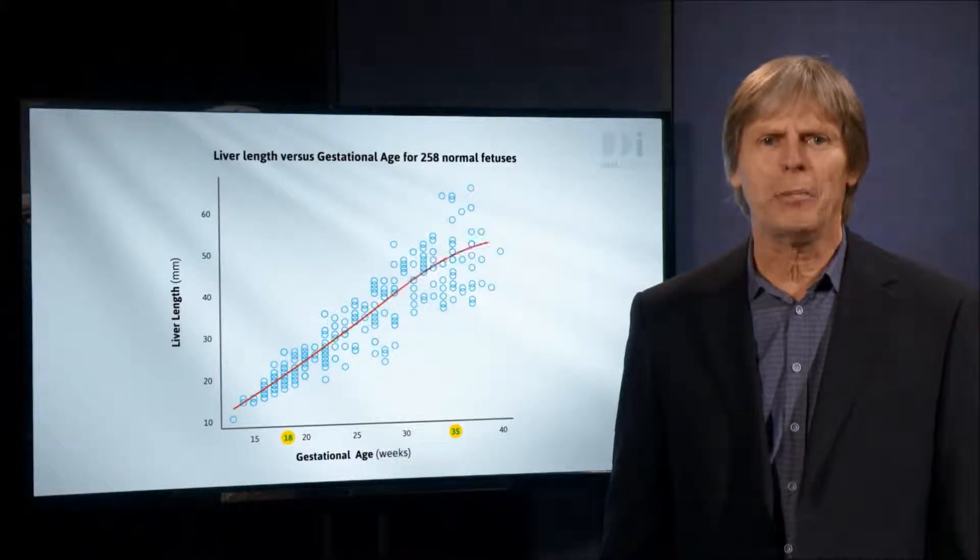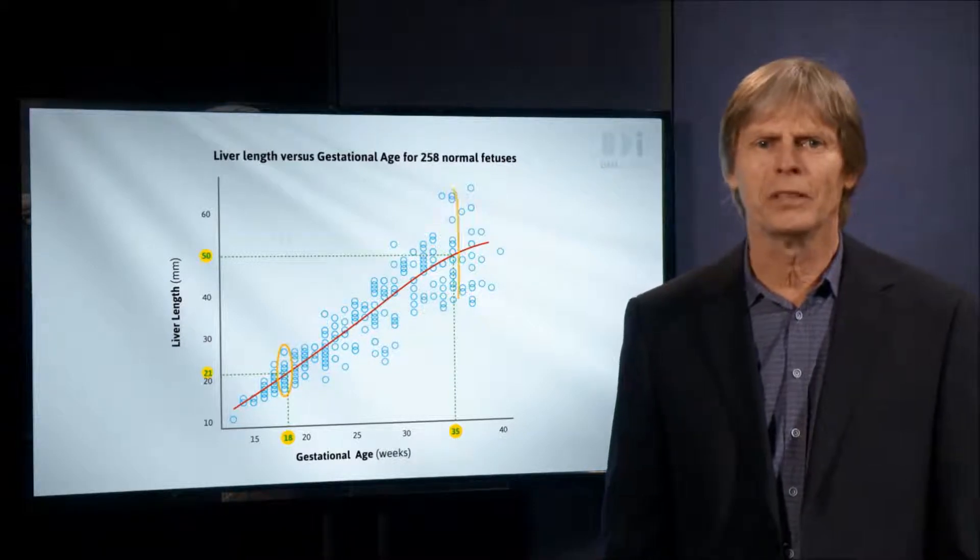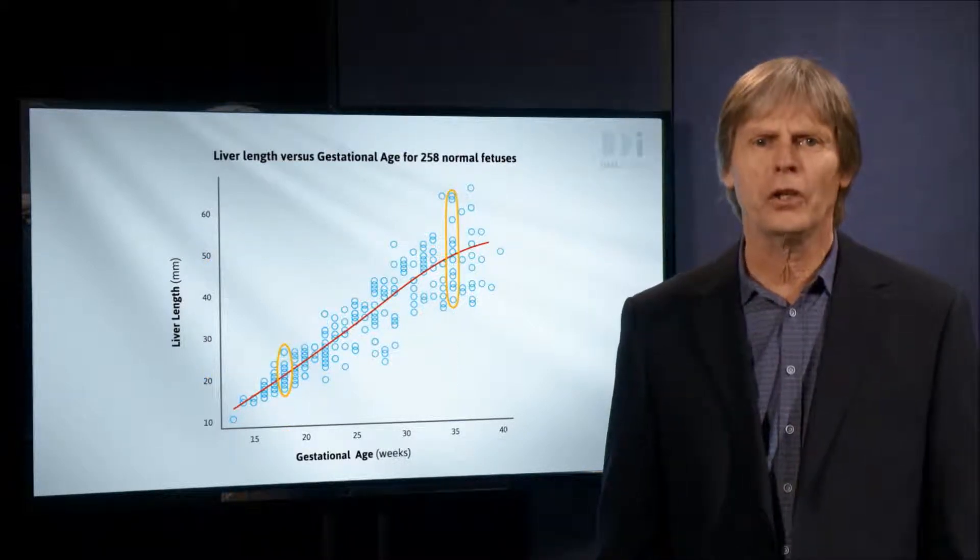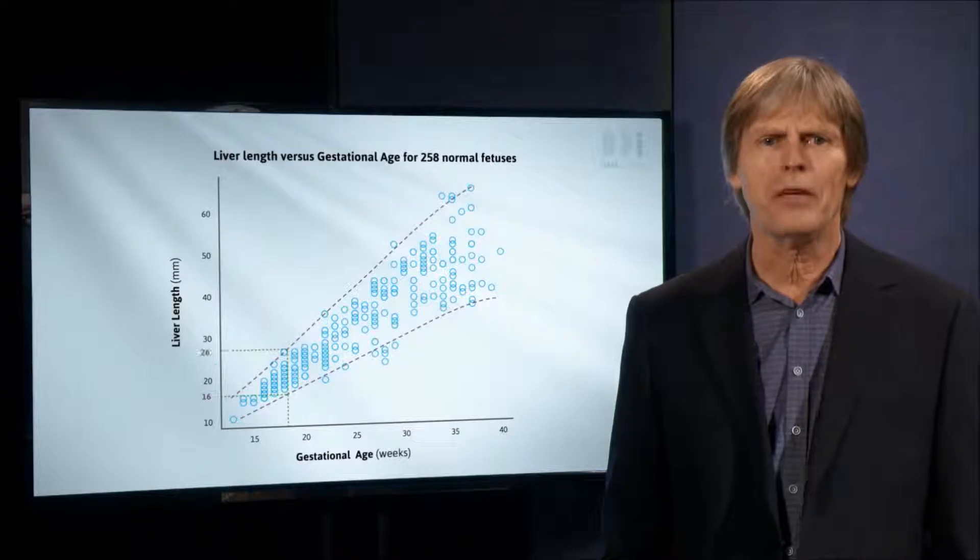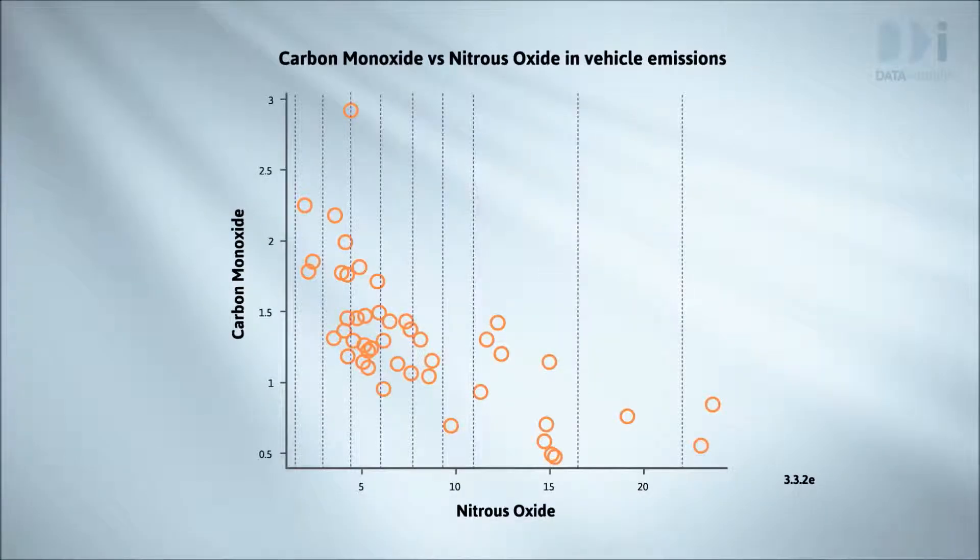Last week we introduced scatter plots for visualizing relationships between two numeric variables. We added trend lines or curves to the plot as a summary of the main pattern we saw in the data. But so far all our curves have been freehand curves drawn by eye to make us really engage with seeing trends.